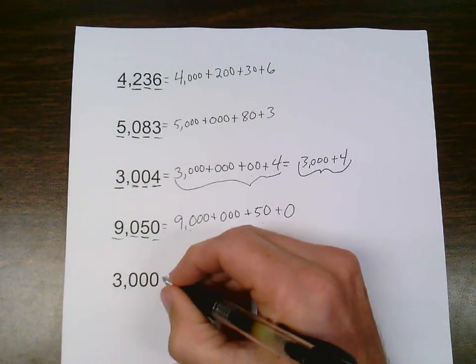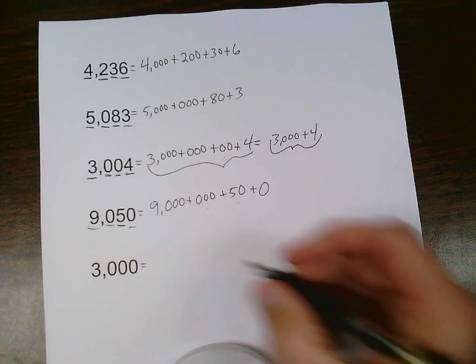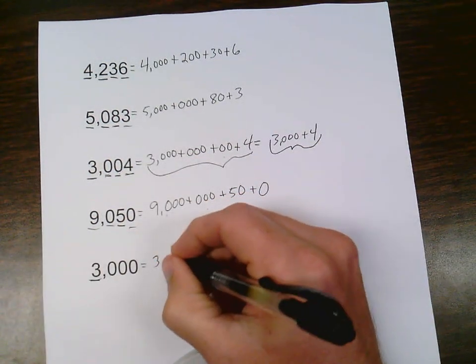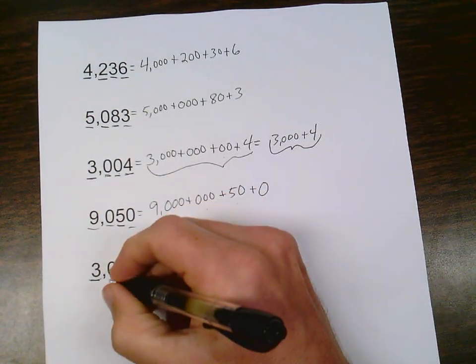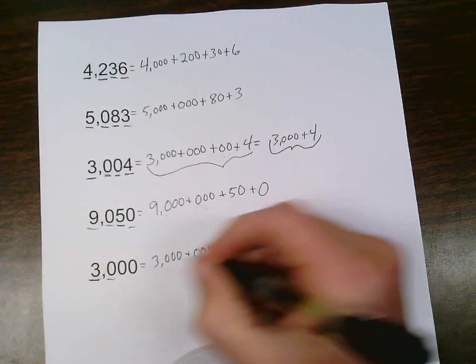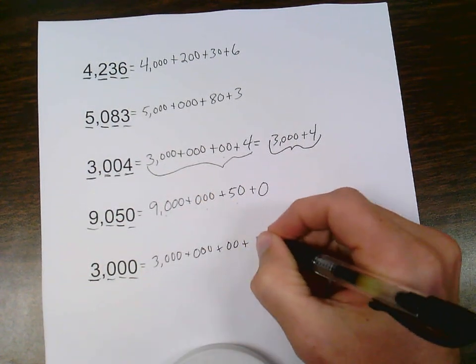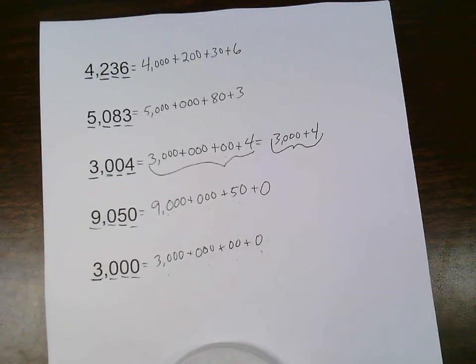And last one here. Now, if I wanted to, I could just say 3,000 equals the value of the 3 in the thousands place, which is 3,000. But like I said, I still like to make sure that I show my pattern, plus 0, 0, 0, plus 0, 0, plus 0. So I still have my 4 digits, 3 digits, 2 digits, 1 digit pattern.